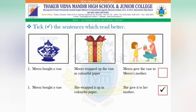Children, look at these pictures. There are few sentences given below the pictures. Let's tick the sentences which read better. Let's read the first group of sentences: Meera bought a vase. Meera wrapped up the vase in colourful paper. Meera gave the vase to Meera's mother. Now let's read the second group of sentences: Meera bought a vase. She wrapped it up in colourful paper. She gave it to her mother.